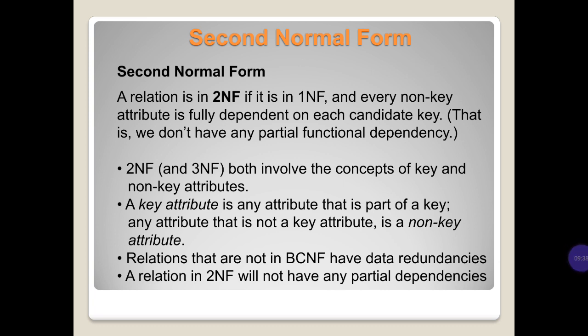Second normal form: a relation is in 2NF if it is in 1NF and every non-key attribute is fully dependent on each candidate key. That is, we don't have any partial functional dependency. 2NF and 3NF both involve the concepts of key and non-key attributes. A key attribute is an attribute that is part of a key; any attribute that is not a key attribute is a non-key attribute. Relations that are not in BCNF have data redundancies. A relation in 2NF will not have any partial dependencies.